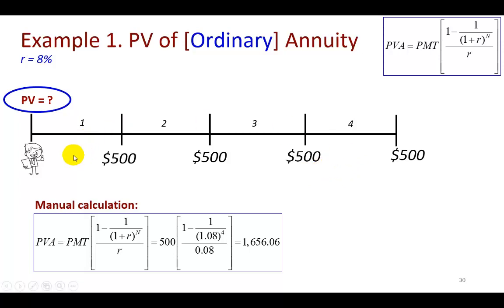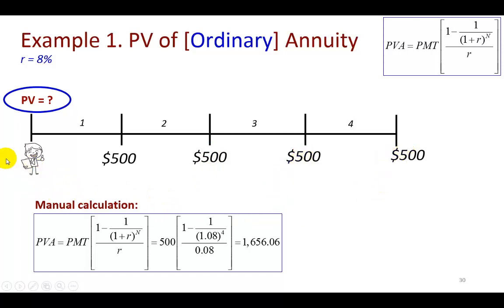To find the present value of this set of cash flows, we can go the old-school way by individually discounting each cash flow to the present. We discount the first $500 over one year, the second over two years, the third over three years, and the final one over four years, all at eight percent, then add them all up.